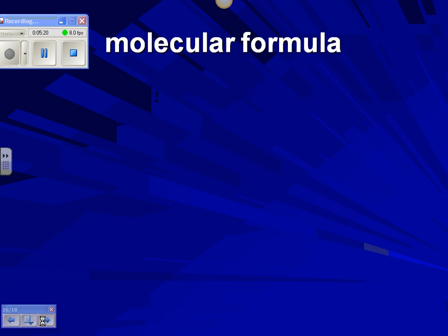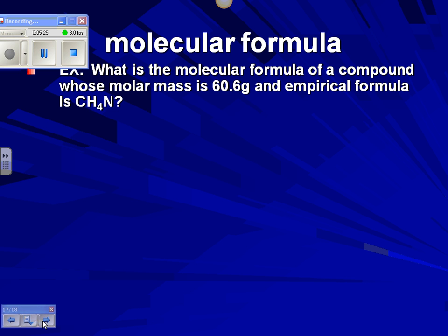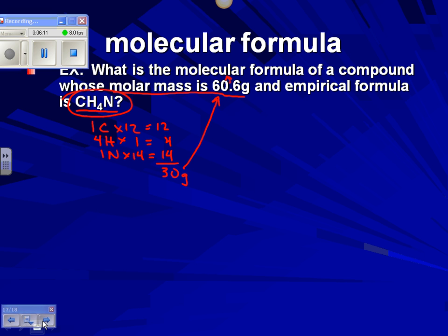A molecular formula is the next step — we need the empirical formula first. Here's an example: we're given the empirical formula and told the molar mass is 60.6 grams. We add up the empirical formula — one carbon (12), four hydrogens (4), one nitrogen (14) — that's 30 grams. The empirical formula weighs 30, but the molecular formula weighs 60.6, so the molecular formula is twice as big. We multiply through by two to get C2H8N2.